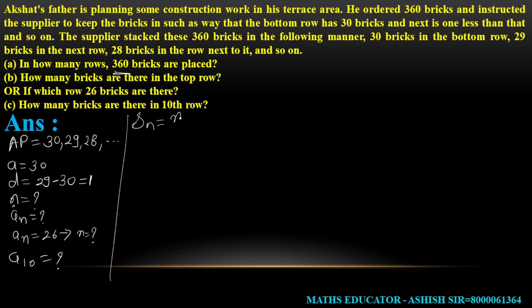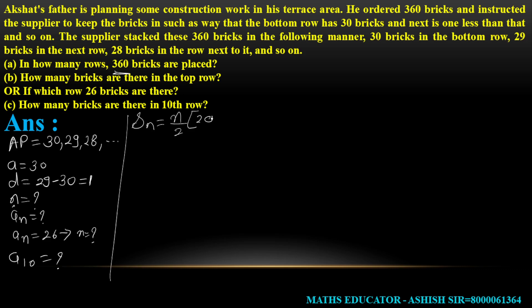The formula for Sn is: Sn = n/2 × (2a + (n−1)d). The value of Sn here is 360, which is the total number of bricks. So Sn equals 360.